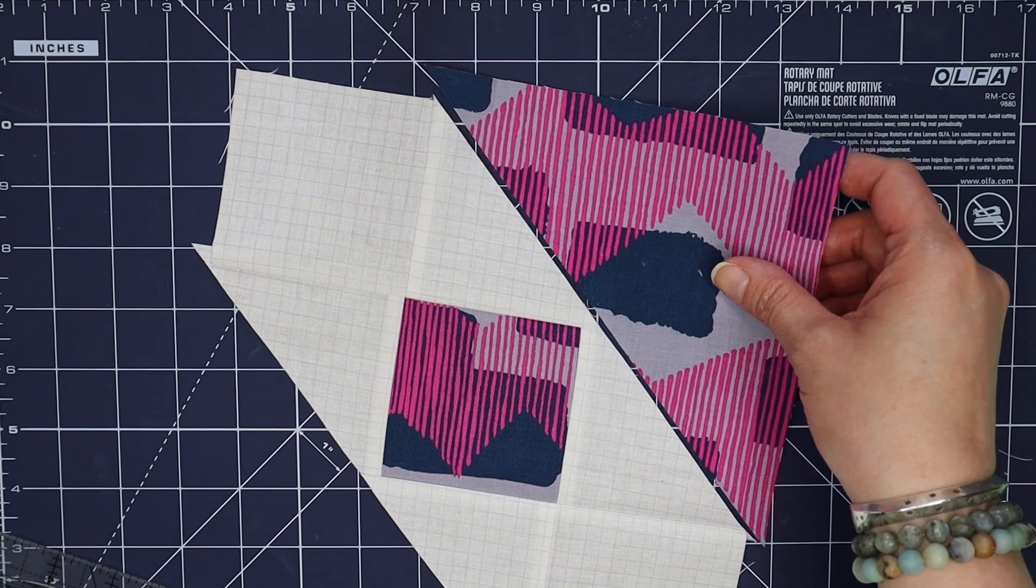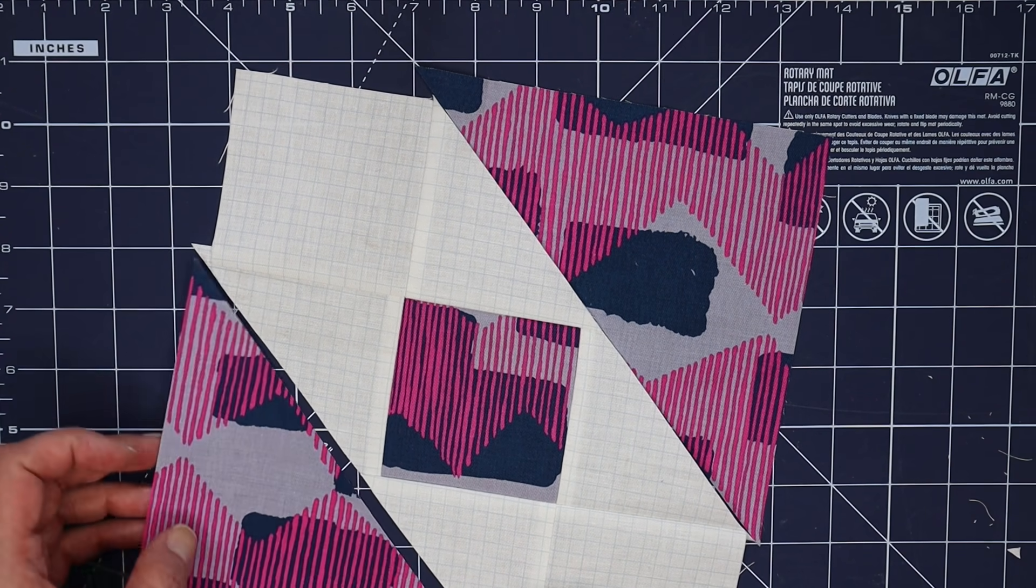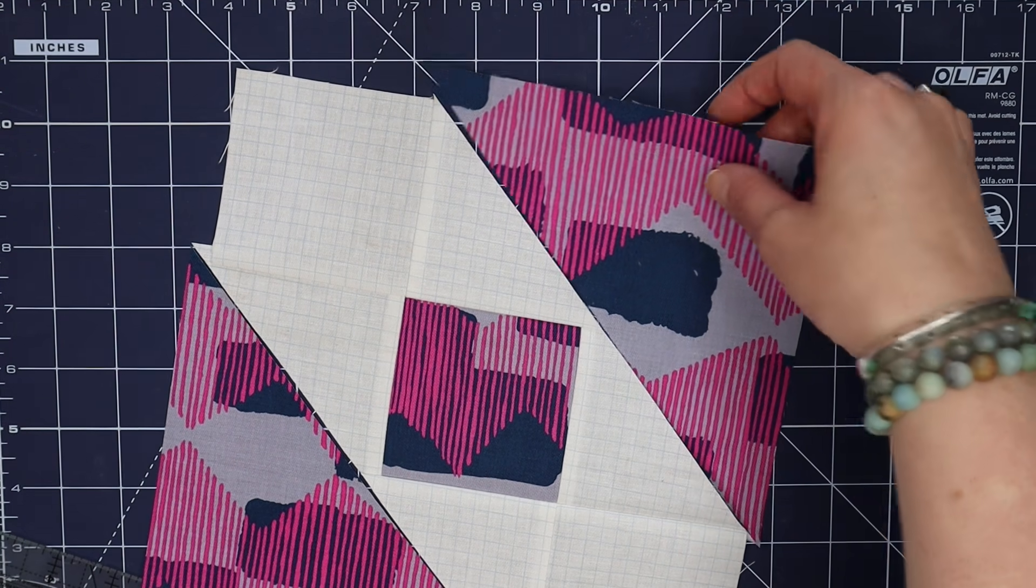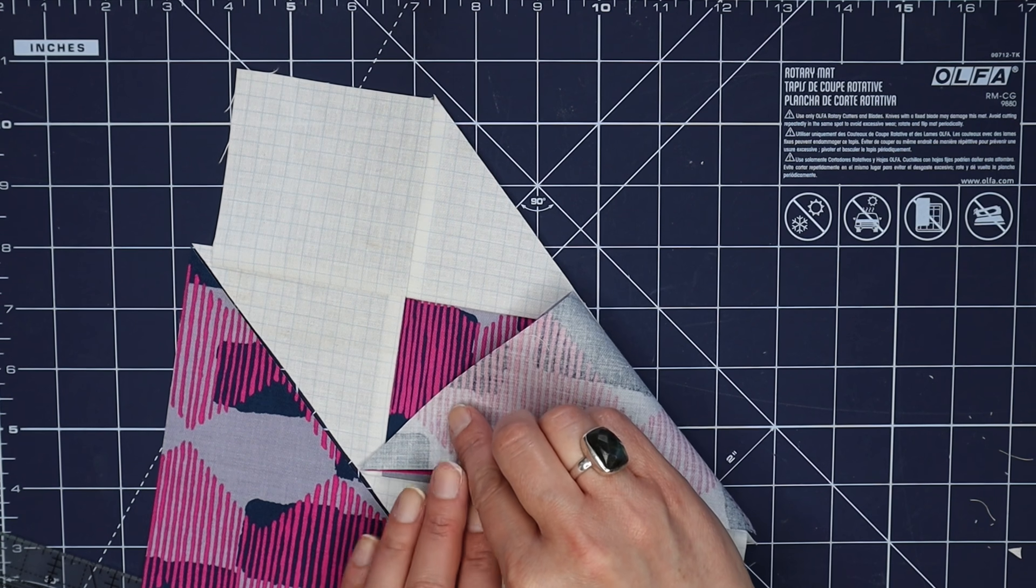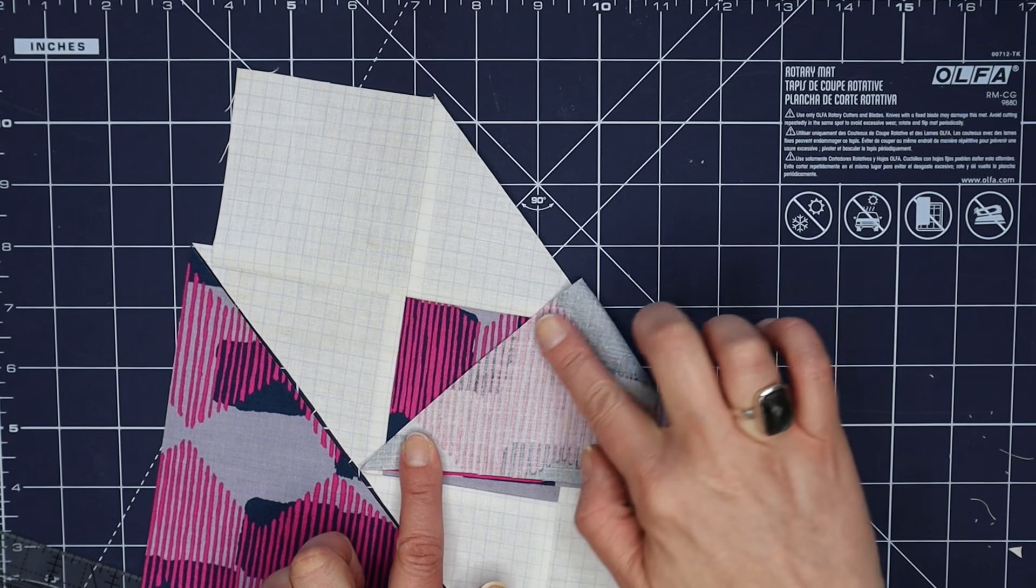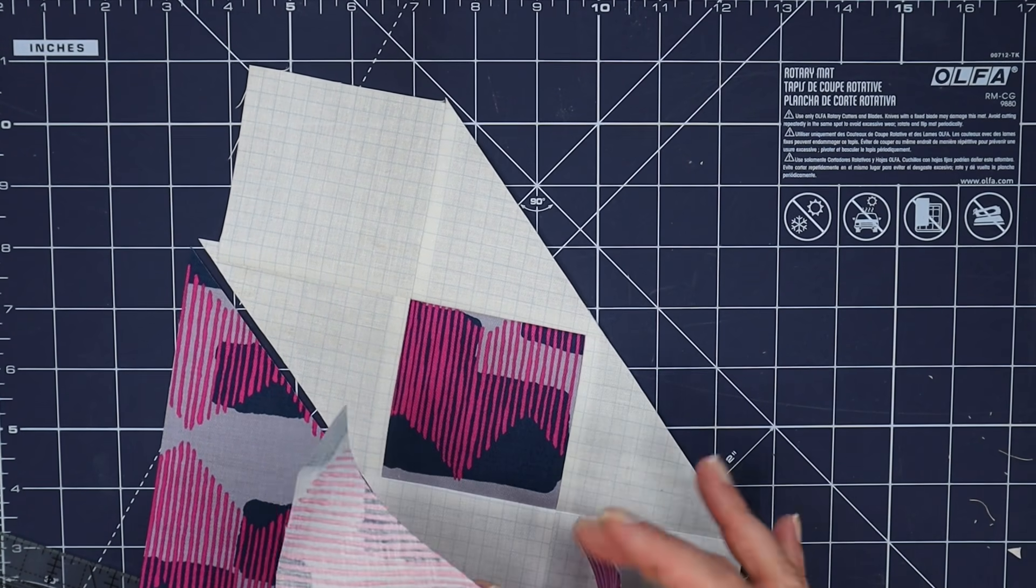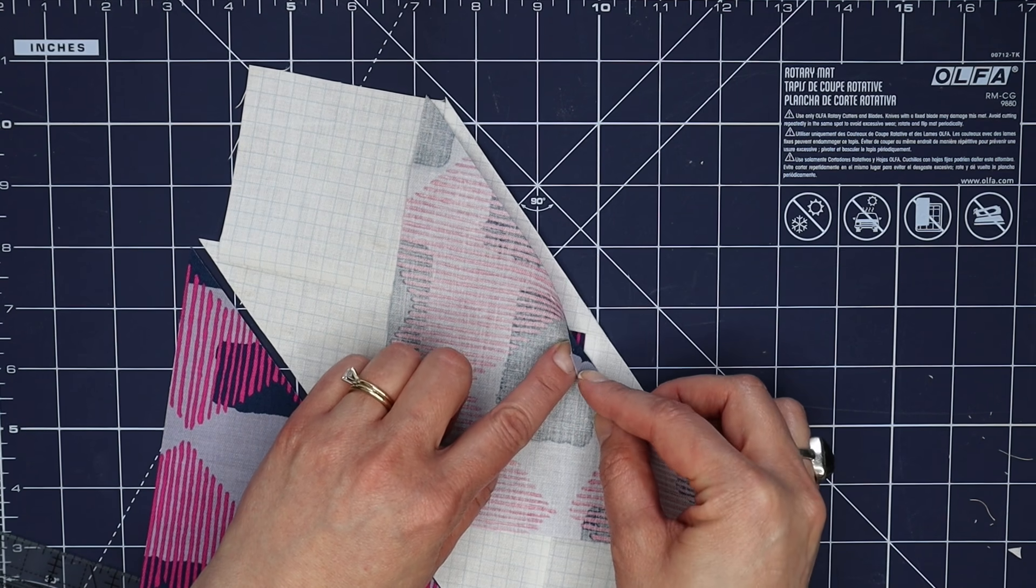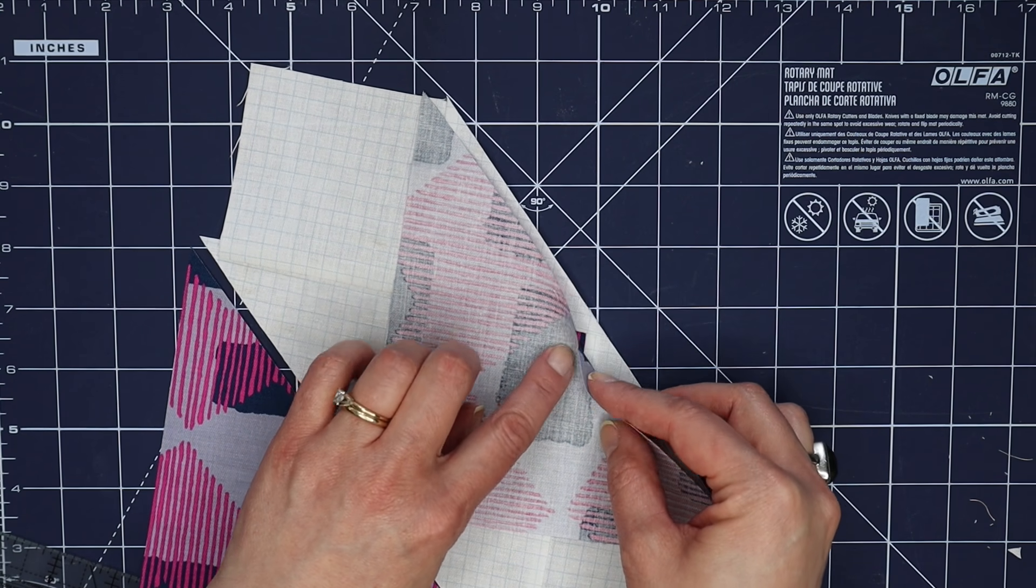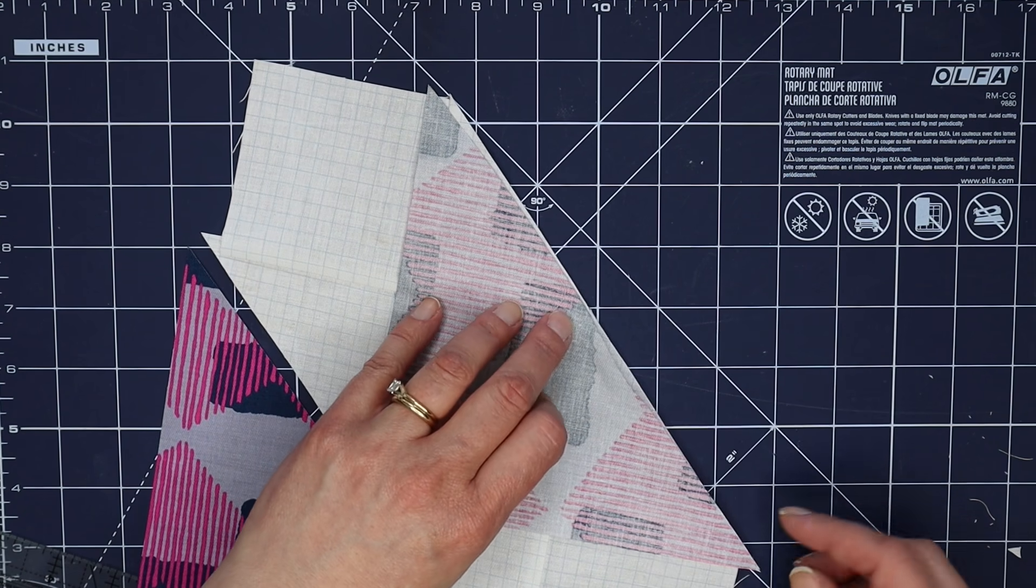This is where it gets fun I think. What I need you to do is mark the center of this triangle and I just do this by folding, so I'm going to fold it and give it a quick finger press here. Then this is where I want to line up that center mark with the center point on this center unit. That's a lot of centering, but it should go together pretty simply at this point.